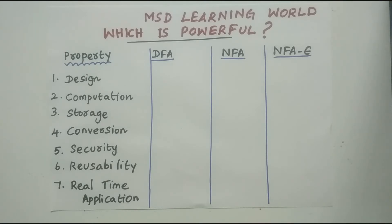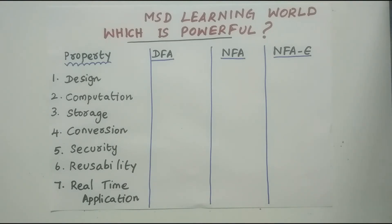The same question can be put to you in terms of a programming language. If you have a question like which one is more powerful — a control structure, whether a while loop, a for loop, or a do-while — each loop can be replaced by another. The for loop can also be represented by a while loop, and the same can be represented by a do-while.